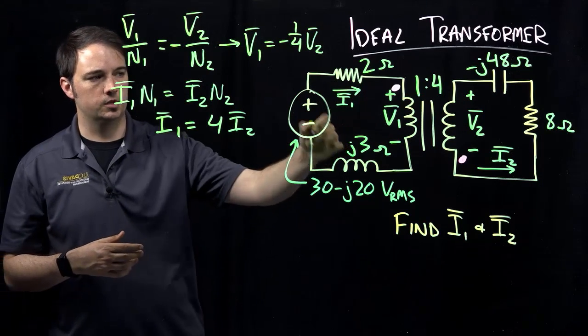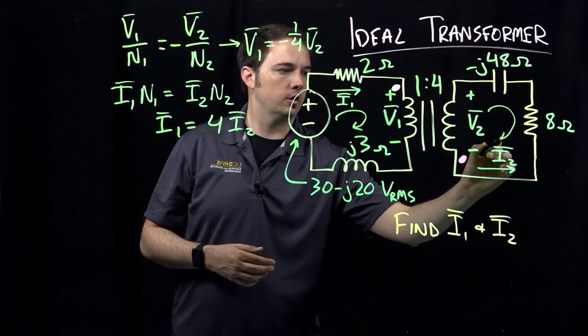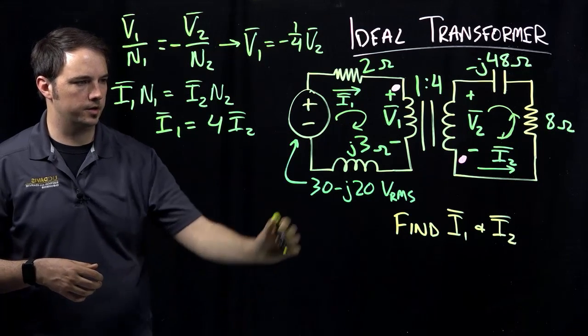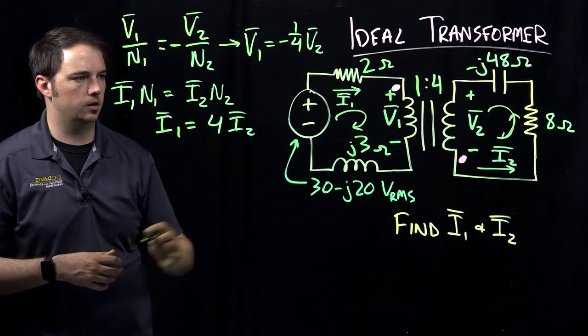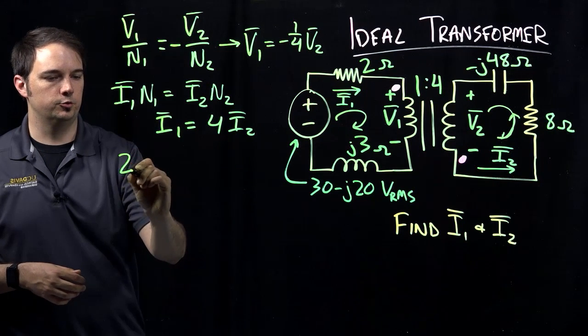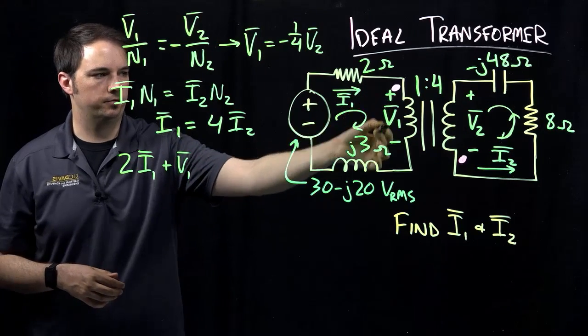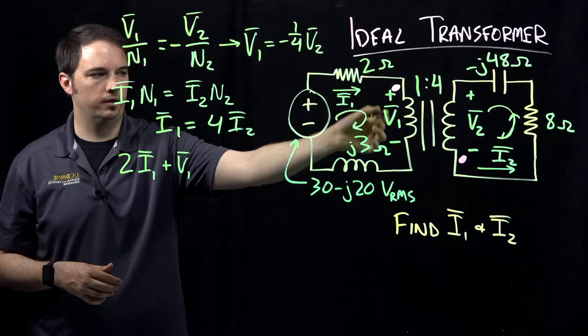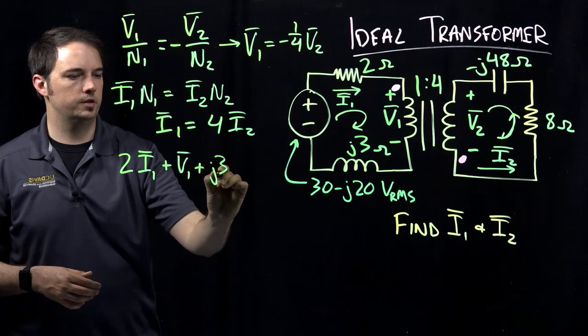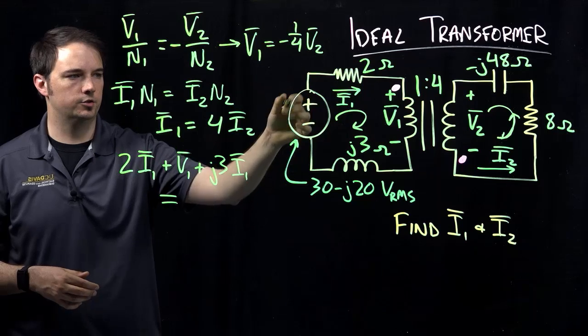So for finding more equations, we could basically just think about applying a mesh current type of approach around each side of the transformer. Sorry, here I will go in the same direction as the current I2. So if I look around the mesh, mesh one here, I would basically again just be adding up all the impedances around or sorry, all the voltage drops around that loop here specifically. So I'd have work out to be, let's see, two, the resistor two times the current I1 plus the voltage drop V1. So here I'm just saying I don't know what the voltage is across the primary side of this transformer, but I have indicated as V1. So I can just plug that into my equation here. The voltage drop then across this inductor would be J3 times the current I1. And then here minus, or I could just say this is all equal then to the voltage from this voltage source, which is given as 30 minus J20 volts.